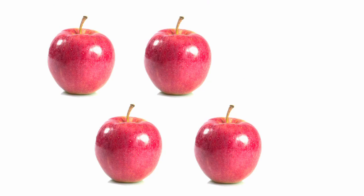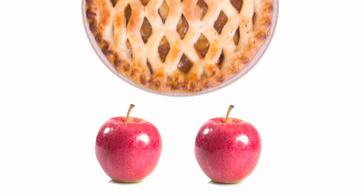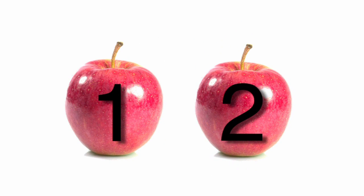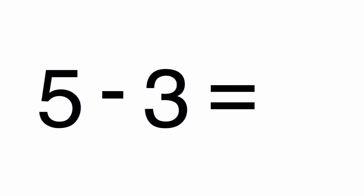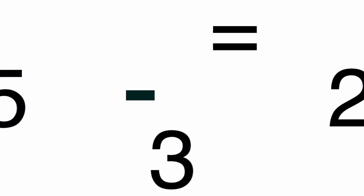Suppose you have five apples and you use three of them to make a pie. That means you have two apples left. You can write this as 5 minus 3 equals 2. The minus sign is used when you subtract.